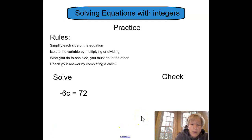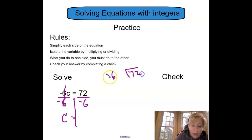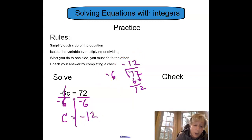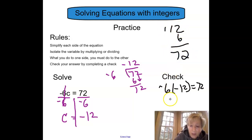Try this problem. Remember, this is a multiplication problem — think about opposites. I need to isolate my C. I'm going to divide by negative 6, because negative 6 divided by negative 6 is going to cancel out and leave me with C. If I divide by negative 6 on the left, I divide by negative 6 on the right. Negative 6 is dividing into 72: 6 goes into 7 once; bring down the 2; 6 goes into 12 twice. So C should equal negative 12. I'm going to do my check by substituting in: negative 6 times negative 12 should equal 72. A negative times a negative is a positive, so I'm good there. 12 times 6 — 12, carry my 1 — 72. 72 equals positive 72. I must have done it right.